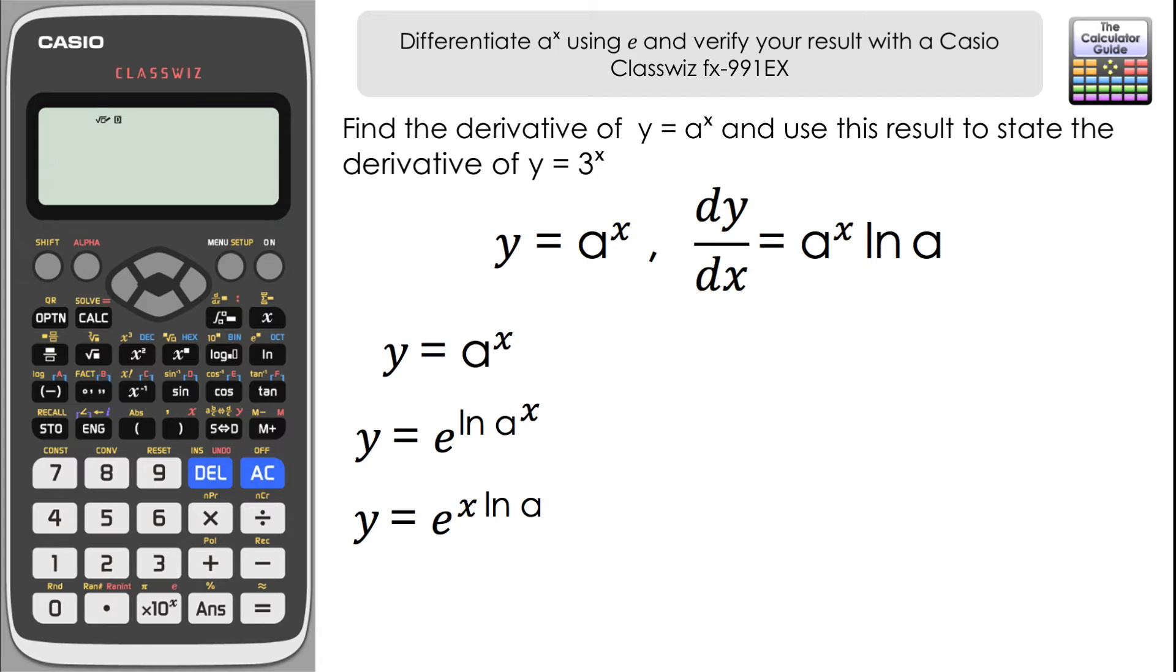If we had e to the 2x, for example, we would know that would differentiate to 2 e to the 2x. If we had e to the 5x, we know that would differentiate to 5 e to the 5x. So we've got e to the natural log of a times x, which again is just a number, so that's going to become the natural log of a times e to the x natural log a. We're just going to have this whole function multiplied by the natural log of a because of the chain rule.